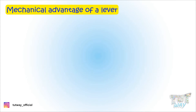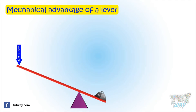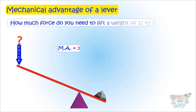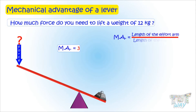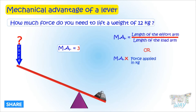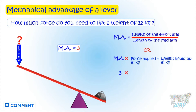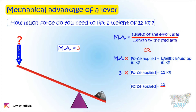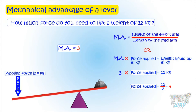Now let's find it the other way. We are given that the mechanical advantage of this lever is 3, and we have to find out how much force in kg is required to lift a weight of 12 kg. Since mechanical advantage multiplied by the force applied equals the weight lifted, 3 multiplied by the force applied equals 12 kg. So the force applied is 12 divided by 3, which is 4 kg. We need to apply only 4 kg of force to lift a weight of 12 kg.